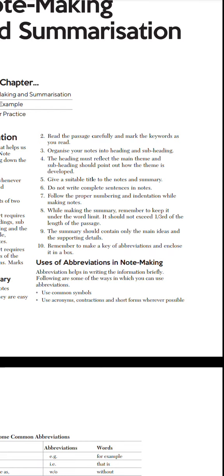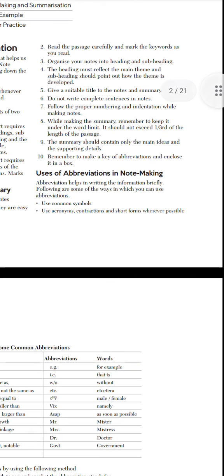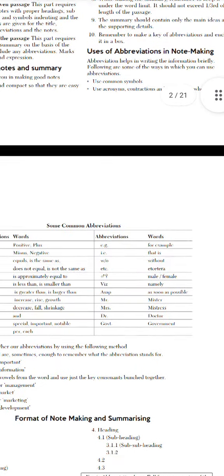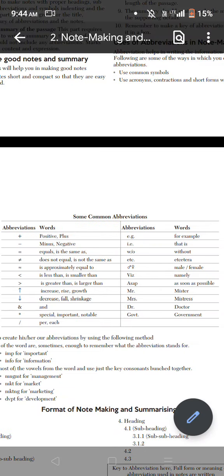The summary should contain only the main ideas and supporting details. The last thing is that you have to remember to make a key of abbreviation and enclose it in a box. Here you can see, this is a box.